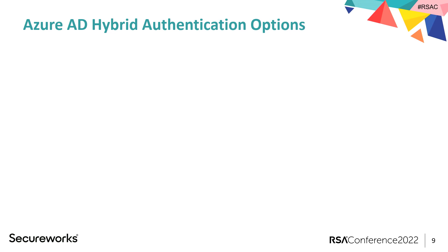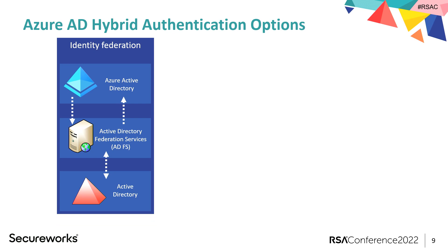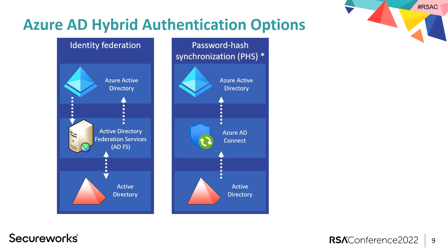For hybrid authentication, there are three options. The first is identity federation — the first solution that allowed users to use the same credentials on-prem and in the cloud, based on trust between an identity provider, usually implemented using ADFS, Microsoft's solution for federation. It also allows seamless single sign-on. However, it required a lot of hardware — minimum two ADFS servers and two proxy servers, so at least four servers just to log in.